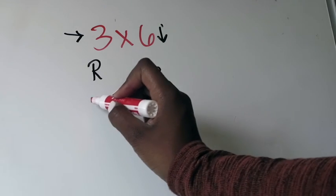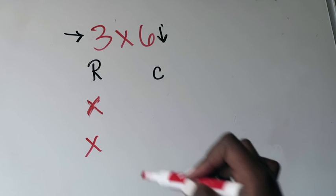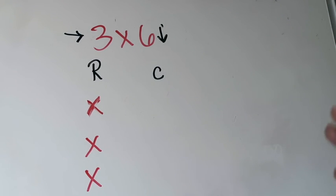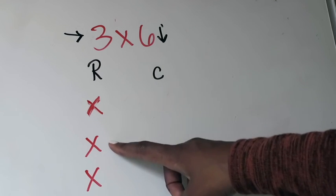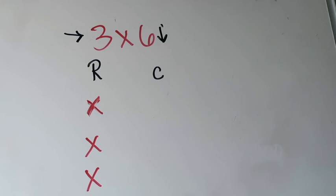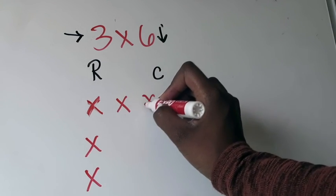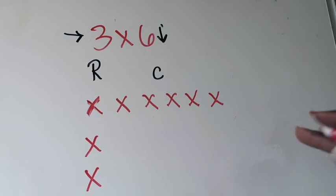So the first thing I want to do is start establishing my three equal groups. I like to use X's when I make my arrays. So I'll put an X here — that's group one, group two, group three. That is the beginning of my three rows or three equal groups. Then I look at my second factor and say, okay, in each of my groups I need to have six pieces. I already have one piece in each group, so I need five more. One, two, three, four, five, six. That row is done.